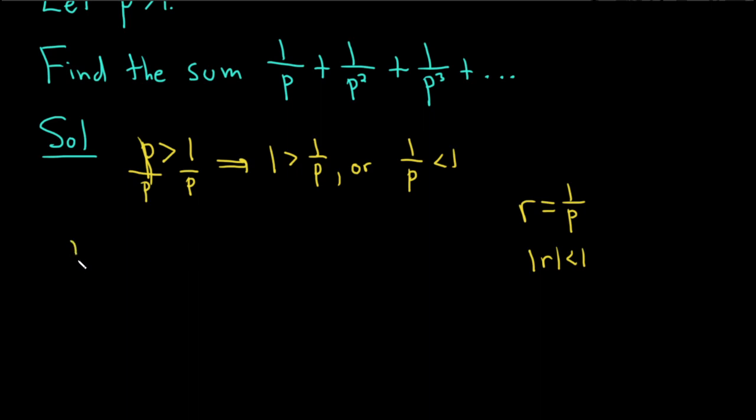So let's go ahead and do it. It's 1 over p plus 1 over p squared plus 1 over p cubed plus dot dot dot.